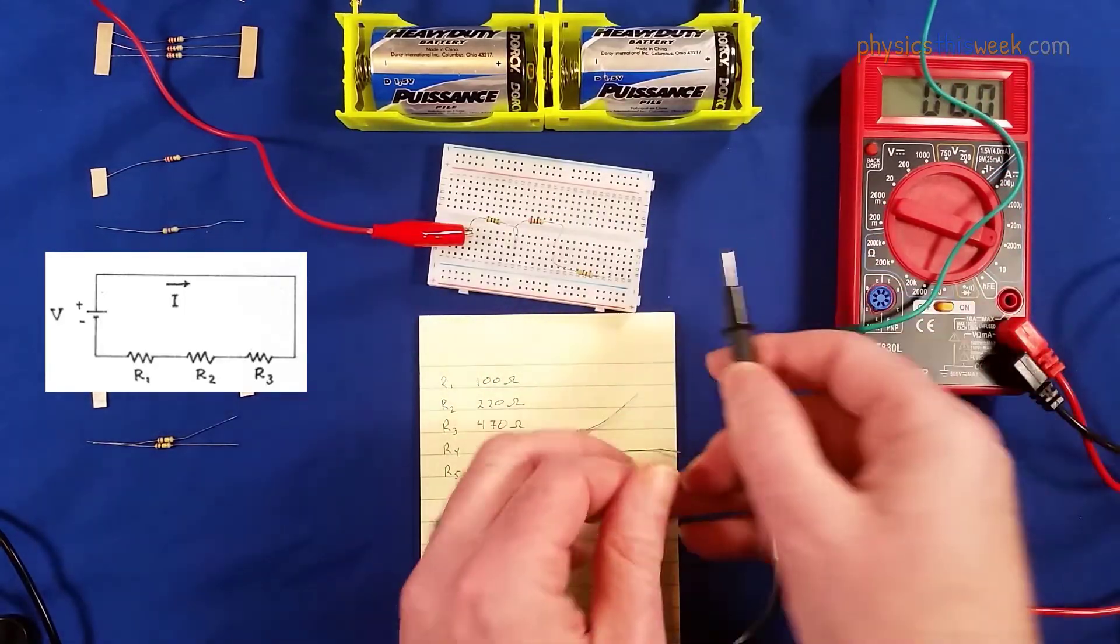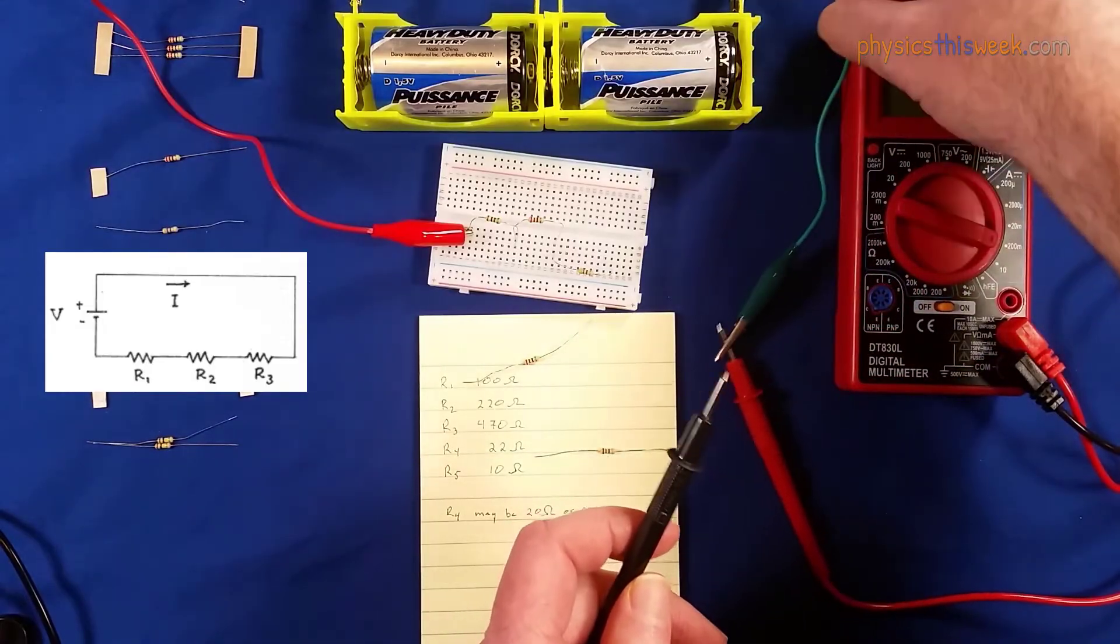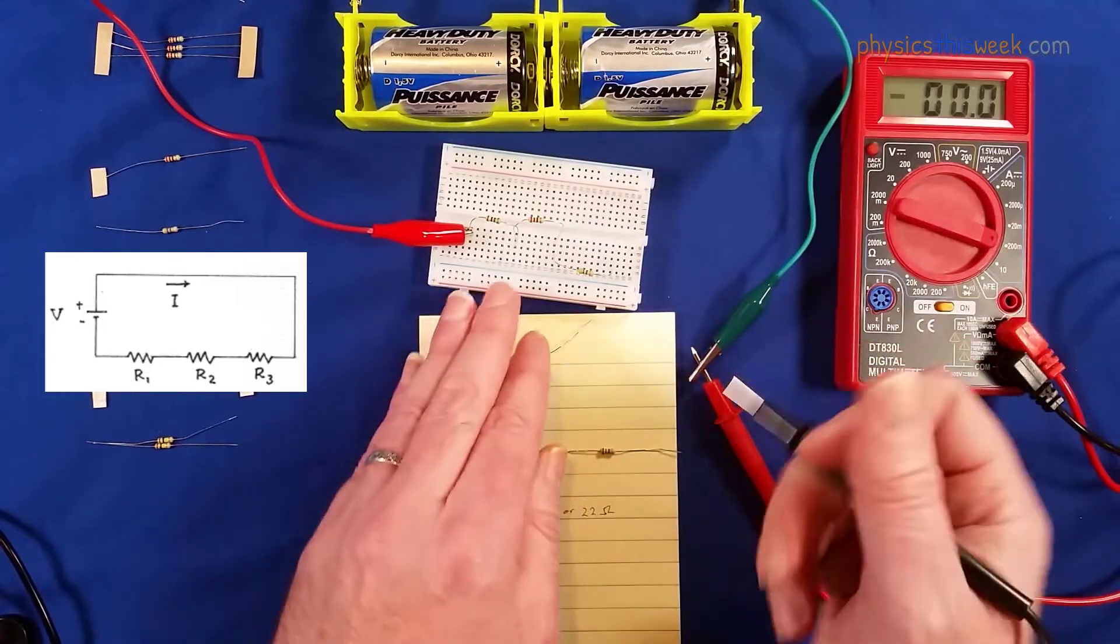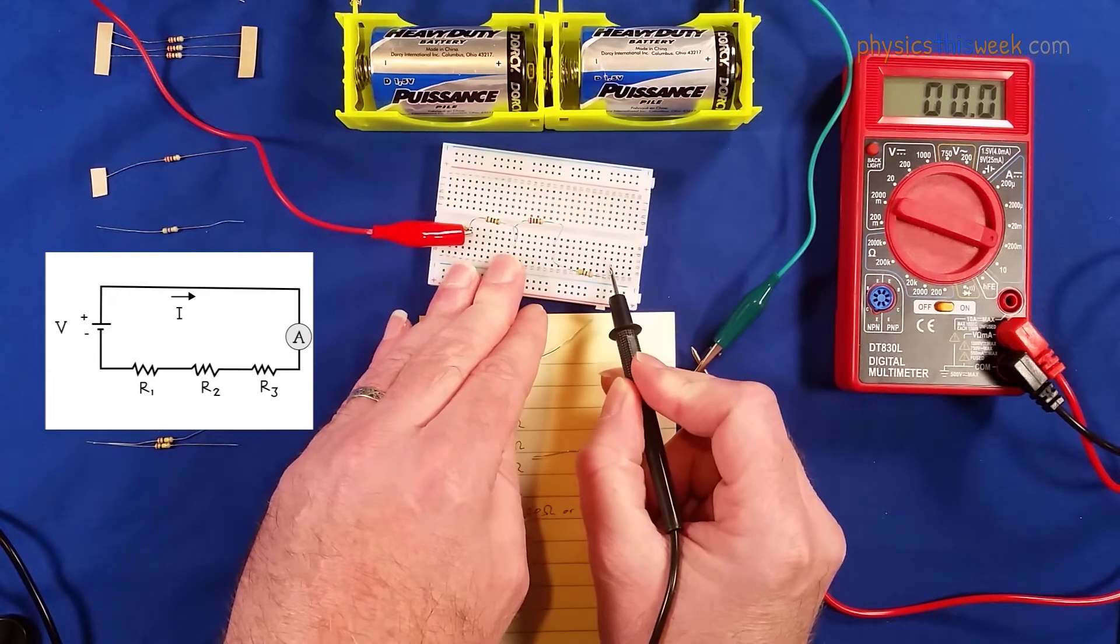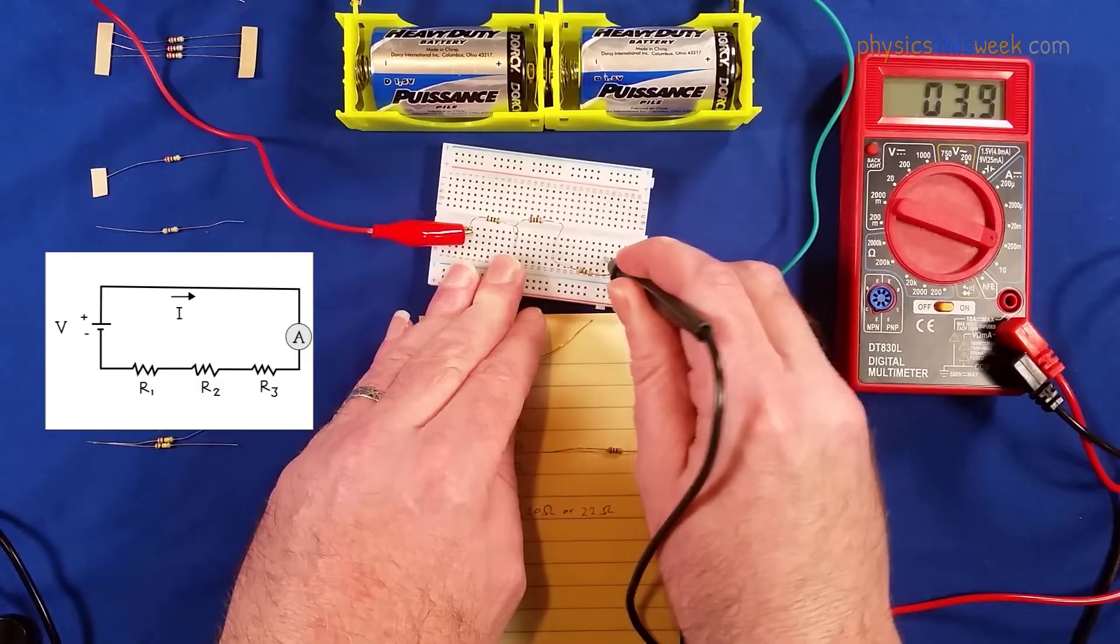So what I'm going to do next is go ahead and measure the current going into the first resistor, and I need to make sure that I get that right in place.